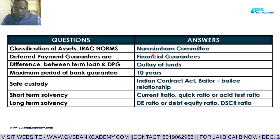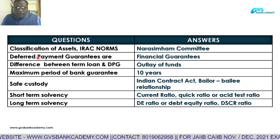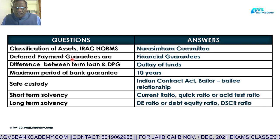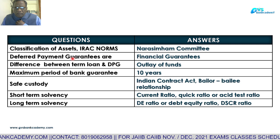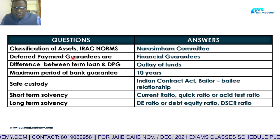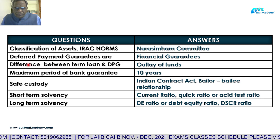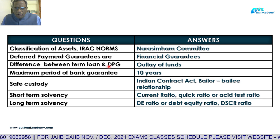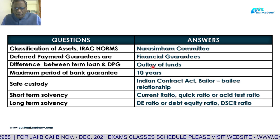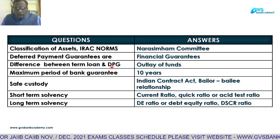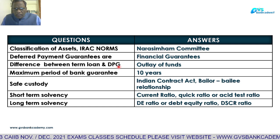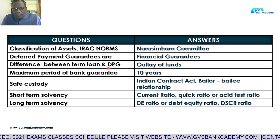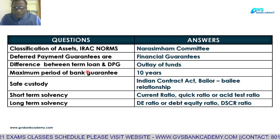DPG — Deferred Payment Guarantees — are financial guarantees for supply of capital goods. The borrowers are directly purchasing the capital goods from suppliers, and for that the supplier asks for a guarantee, which banks provide. That is called a financial guarantee. DPG is always treated as a financial guarantee. The difference between a term loan and DPG: in a term loan we are deploying funds and disbursing the loan, whereas under DPG we are giving an undertaking on behalf of the borrower in the form of a guarantee.